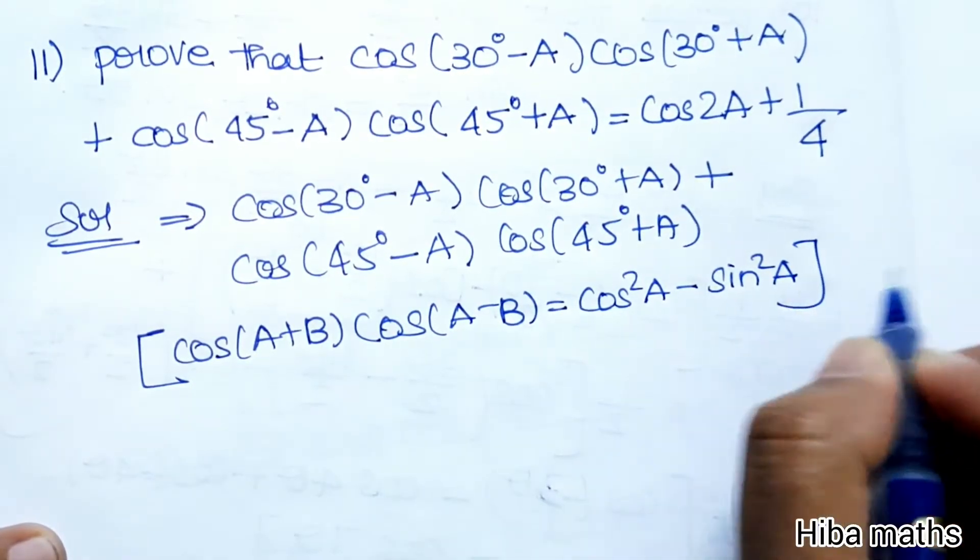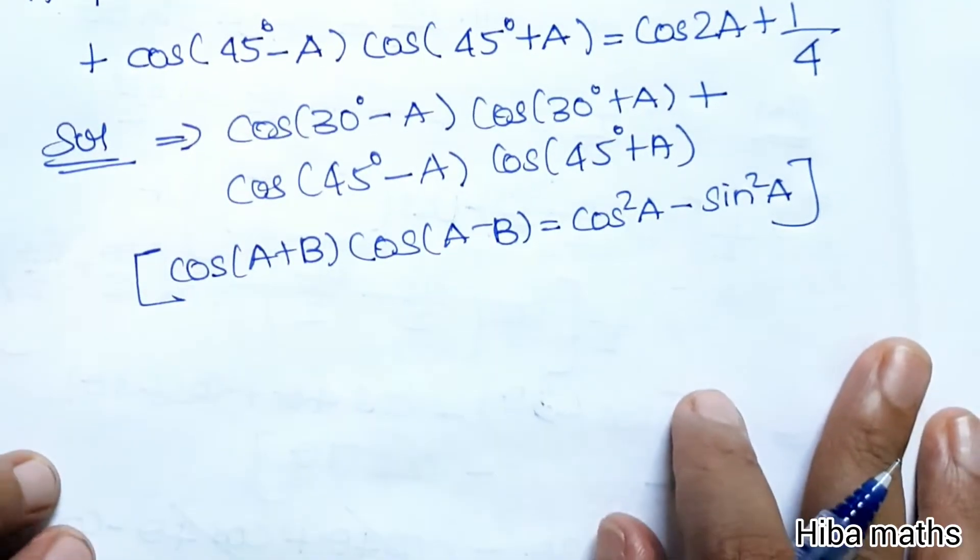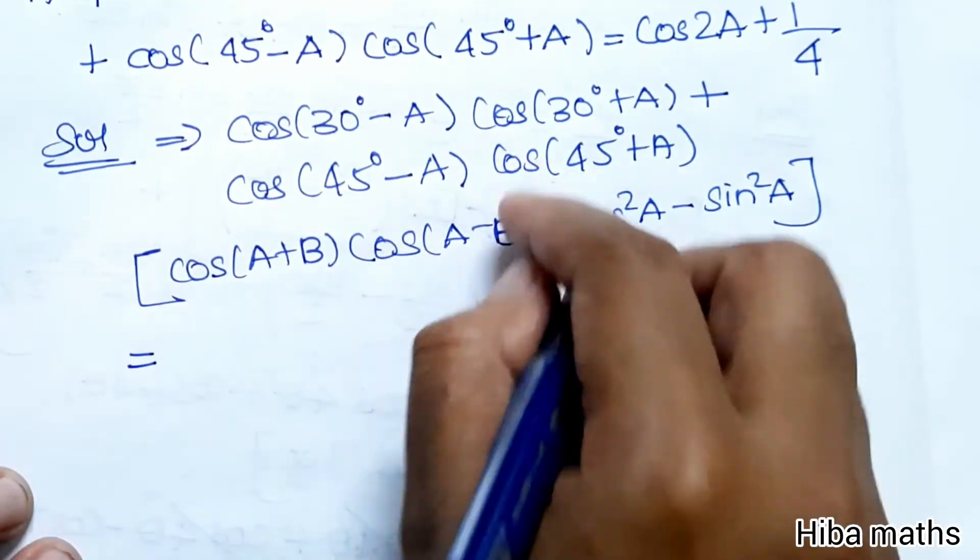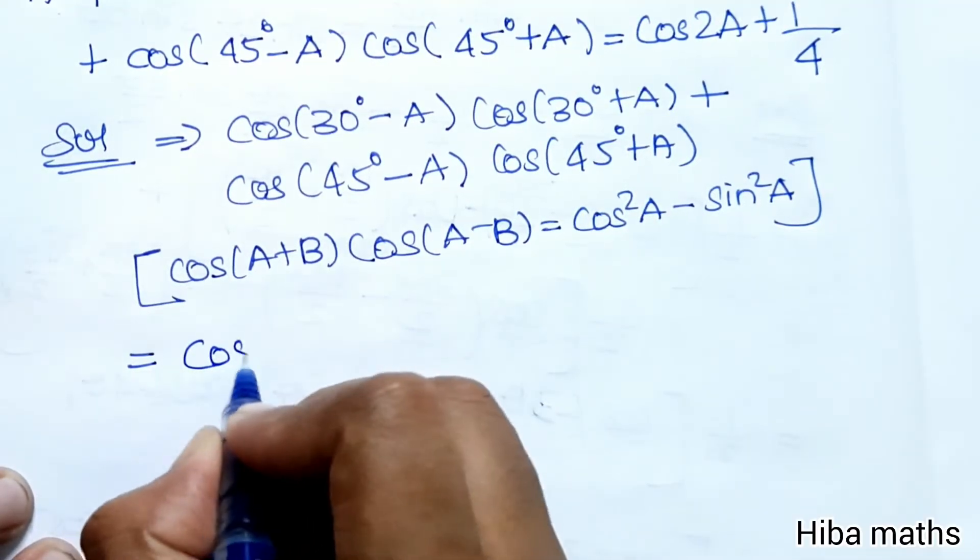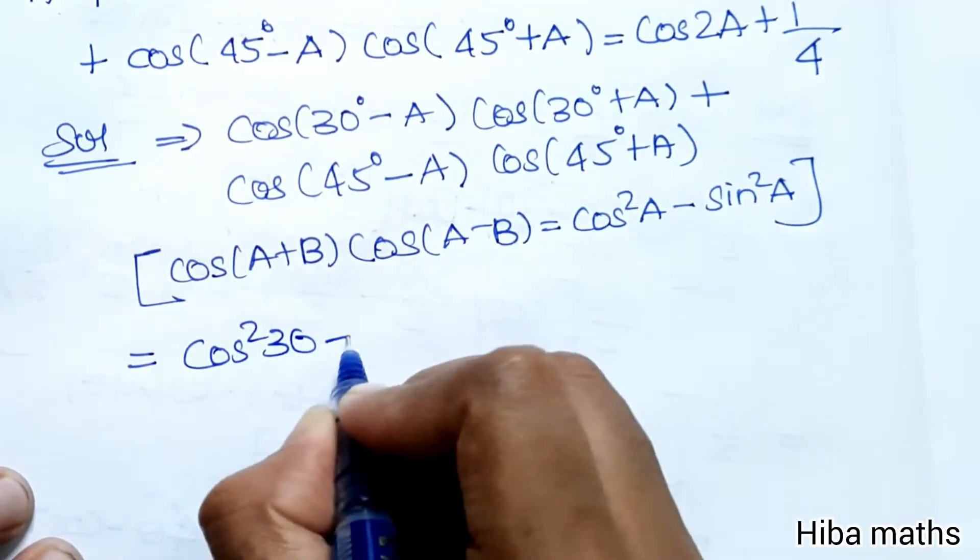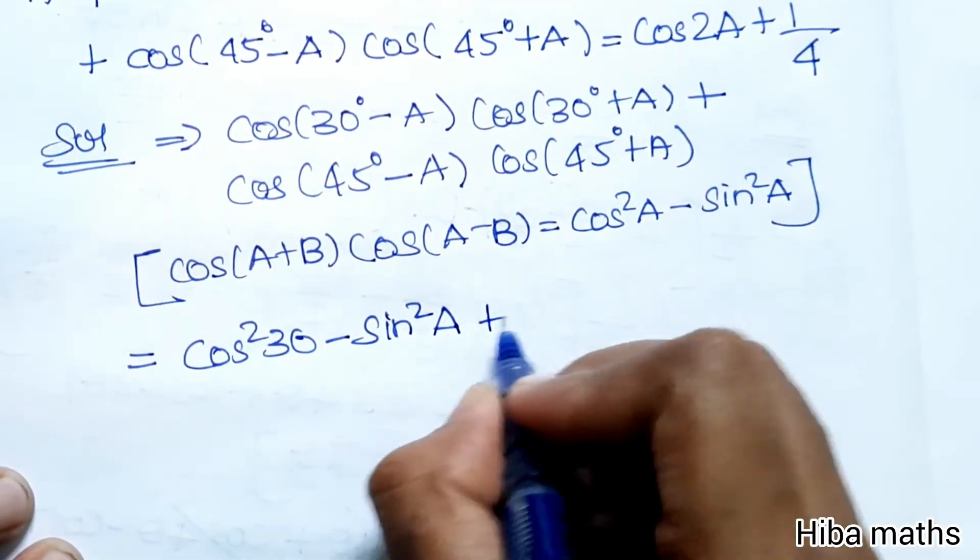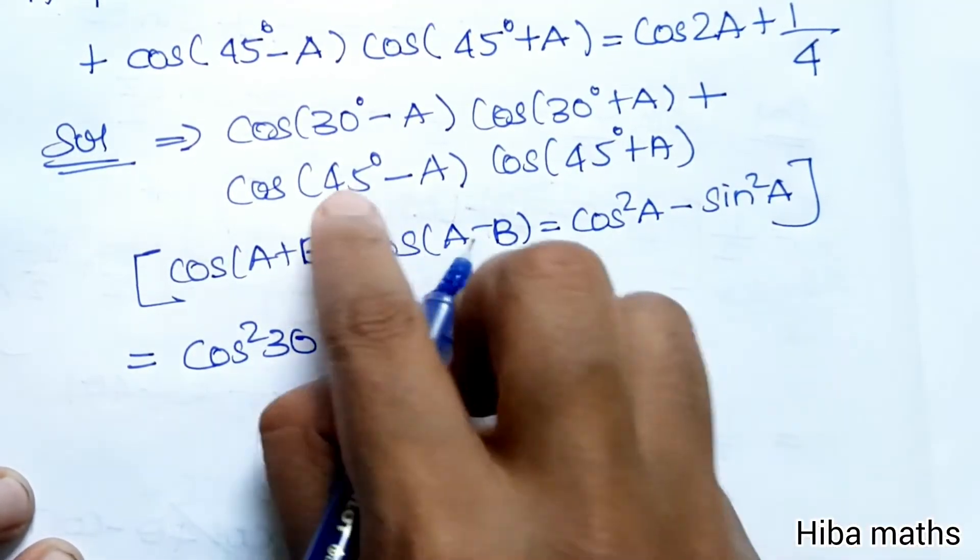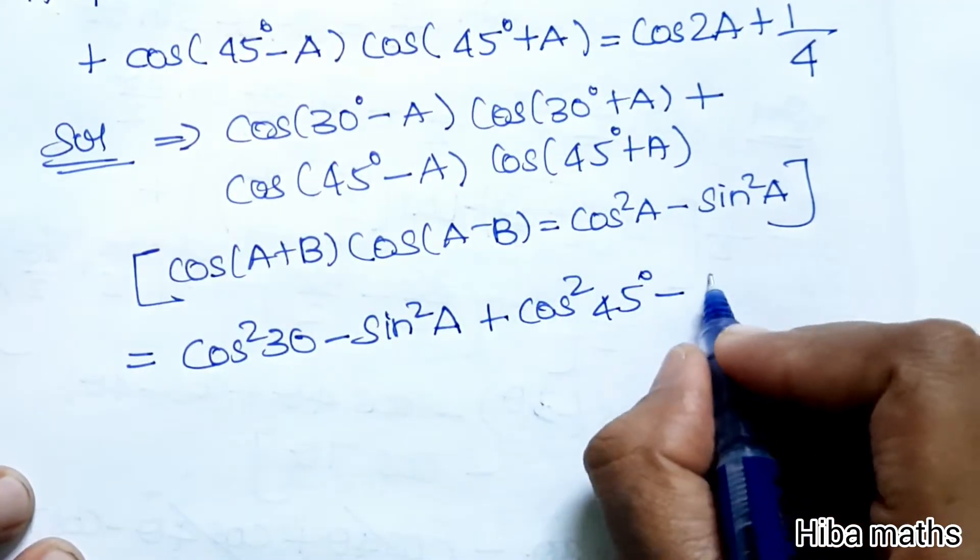So this is one identity. Now if we have A + B and A - B in multiplication, we will substitute. Here A is 30 and B is A, so cos²30 - sin²A. Similarly, for the second term we have 45 degrees, so cos²45 - sin²A.